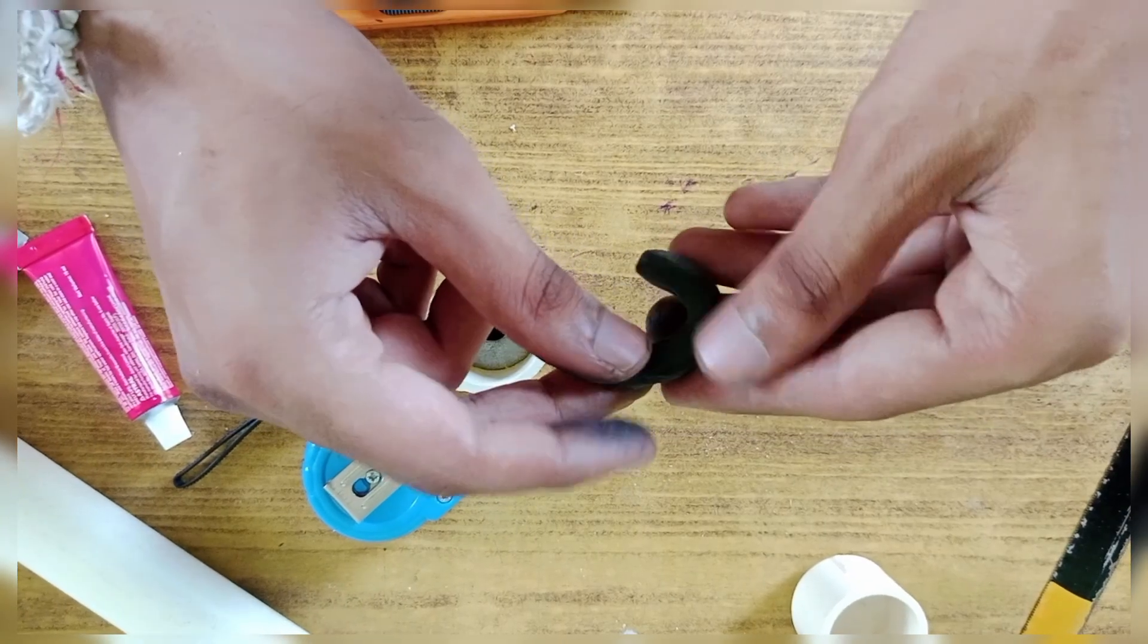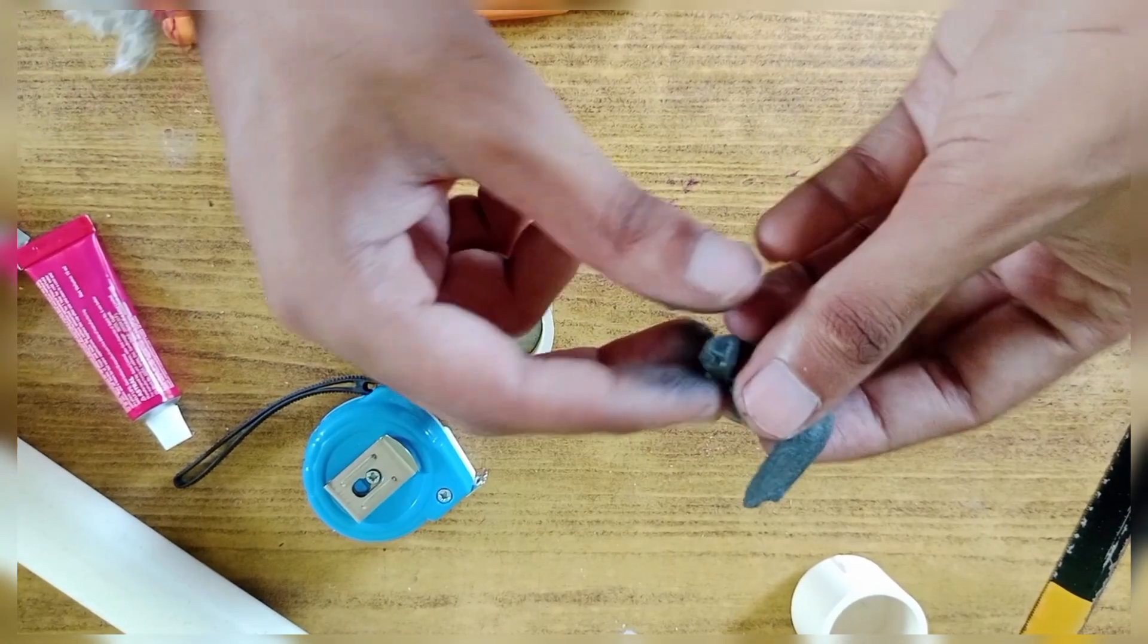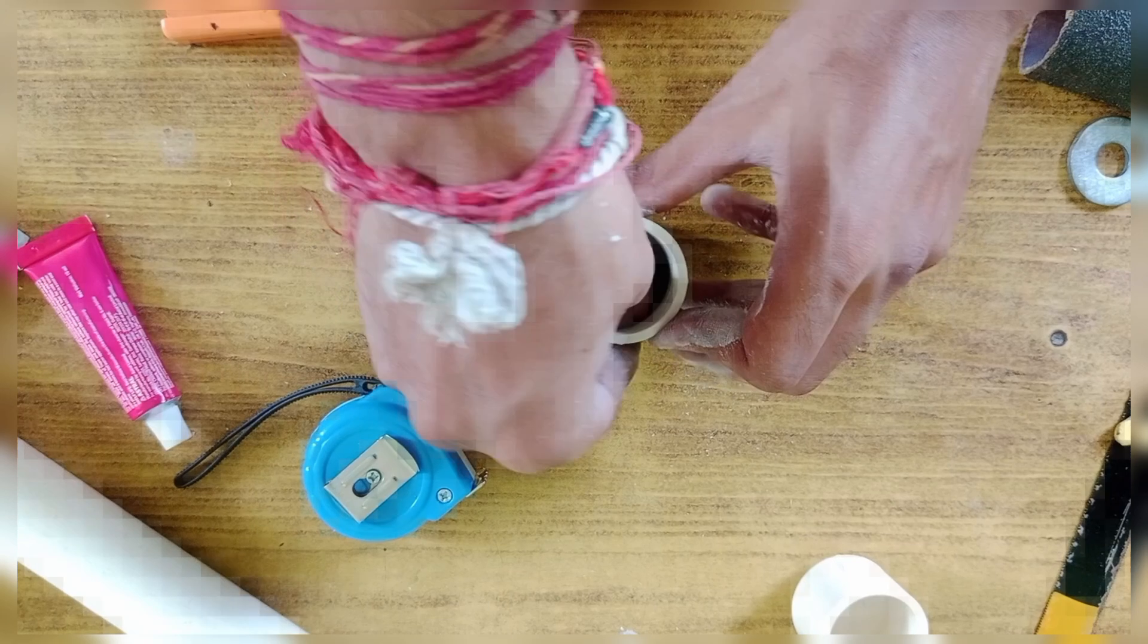After gluing the washer, I started adding clay adhesive to form the converging section. This part of the nozzle is important because it increases the gas velocity before the flow reaches the throat.